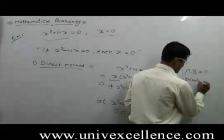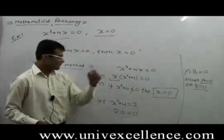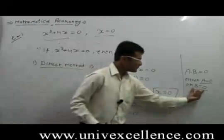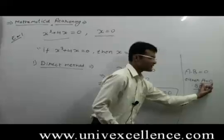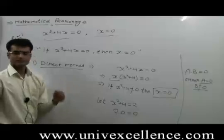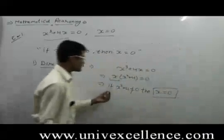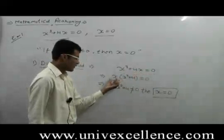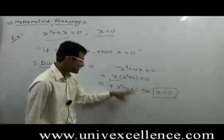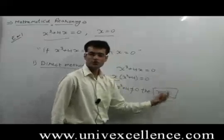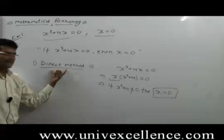So either a is equals to 0 or b is equals to 0. If we say x square plus 4 is not equals to 0, meaning b is not equals to 0, then a — that is x — must be equals to 0. So for the question: x cube plus 4x equals to 0, take x common: x into x square plus 4 equals to 0. Since x square plus 4 is not equal to 0, x must be equal to 0. This statement is true by the direct method.